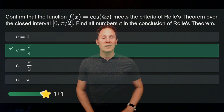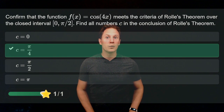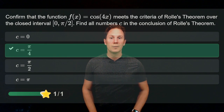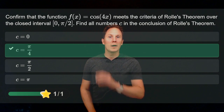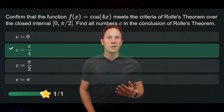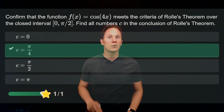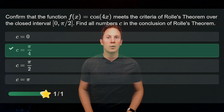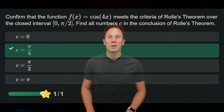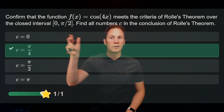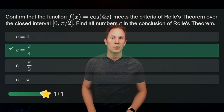I've selected c = π/4, so let's check the criteria first. The cosine of 4x is continuous everywhere, so it is continuous on the closed interval [0, π/2]. It is differentiable everywhere, so it is also differentiable on the open interval (0, π/2).